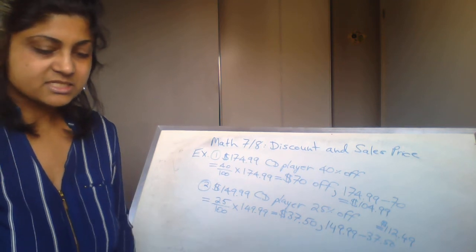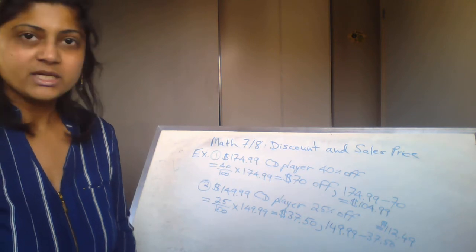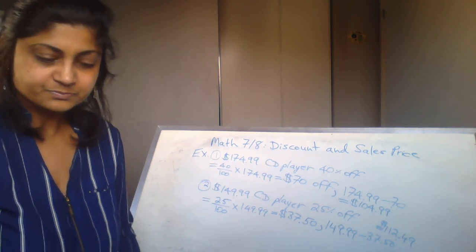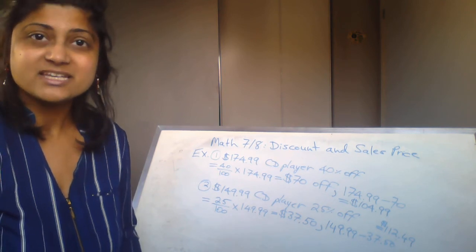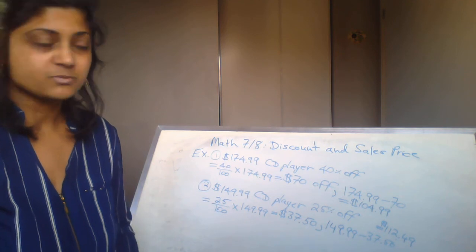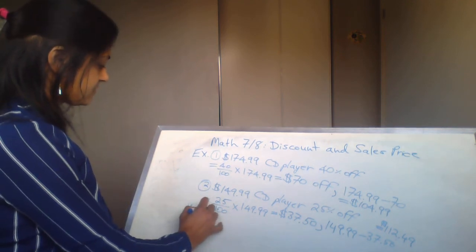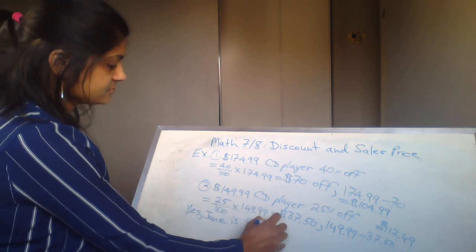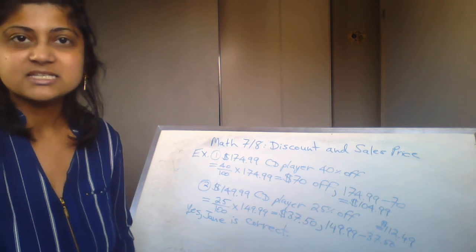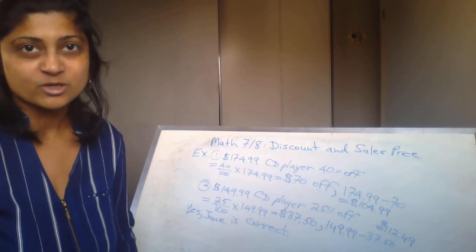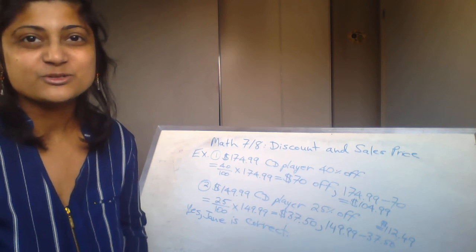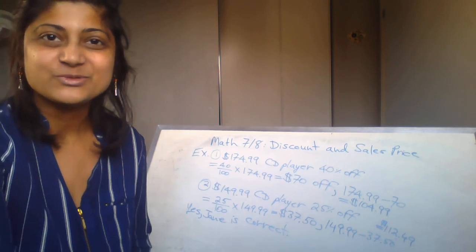Comparing the two, the second option is more expensive. Since 40% is a very significant discount, the first CD player ends up cheaper. The question asks if Jane is correct — yes, Jane is correct. The CD player that is $174.99 at 40% off is actually cheaper. When writing your concluding sentence, make sure you provide an explanation, since this is an application and communication question. That brings this video to an end — thank you for watching, please like, share, and subscribe!